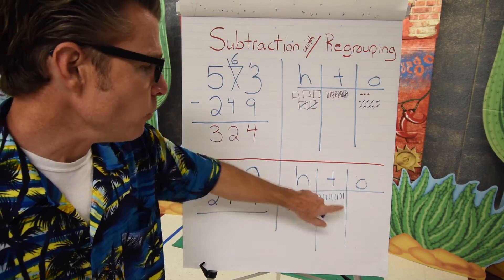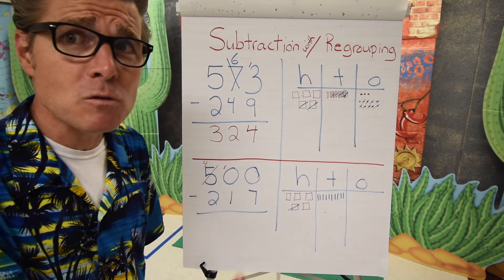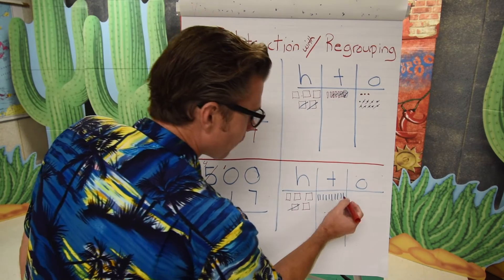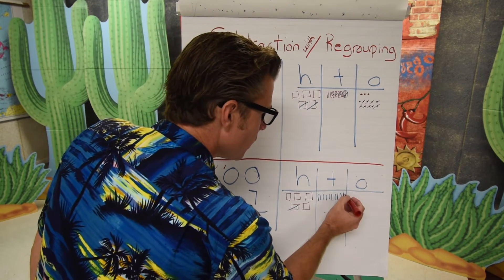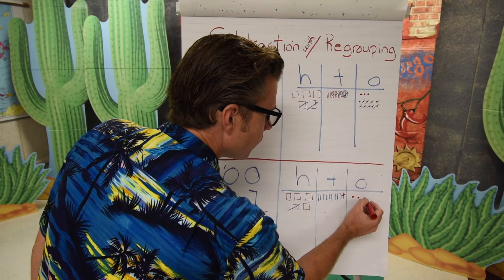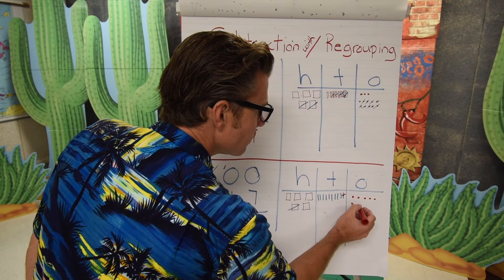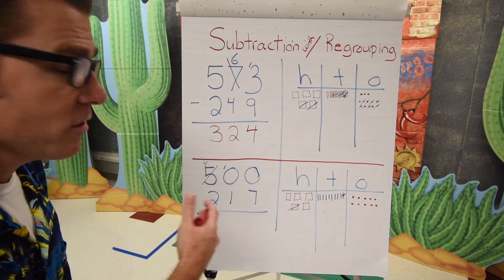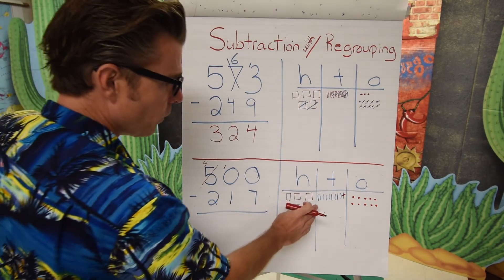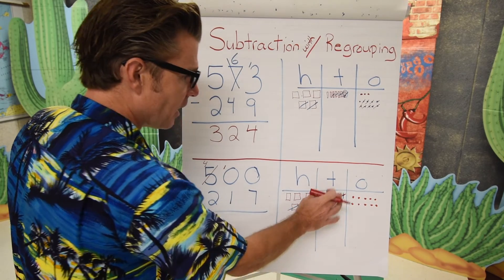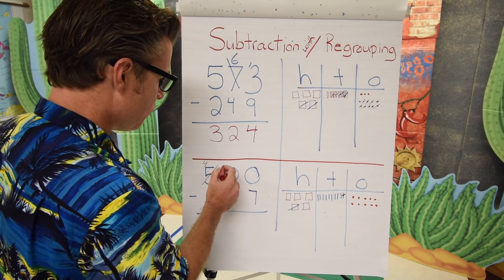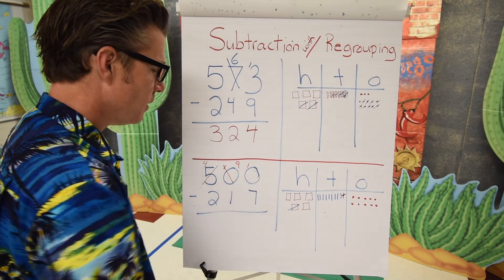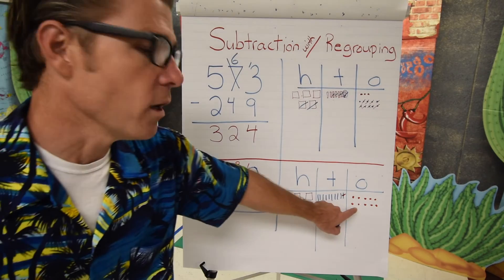Now we visit the tens spot. Since we have ten tens, we can break one of those tens into ten ones. We mark through one ten and count out ten ones. In our problem, we're now left with nine tens, so we turn that ten into nine. Then we add ten into the ones spot. Now every place has some value to work with.